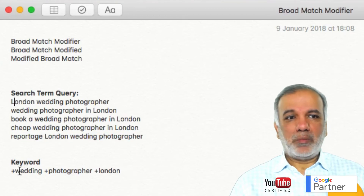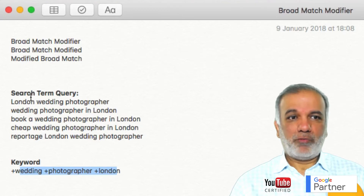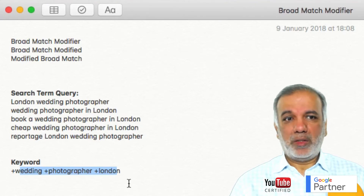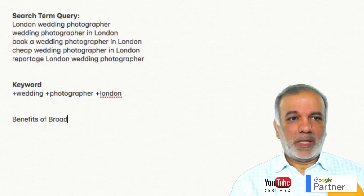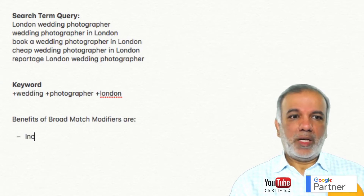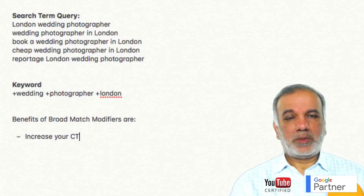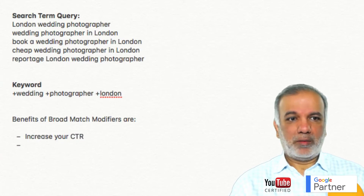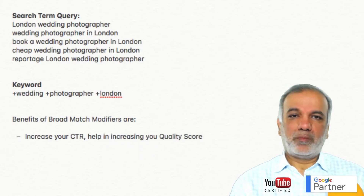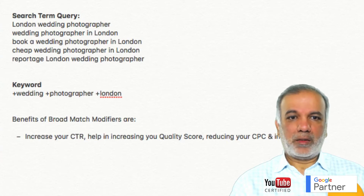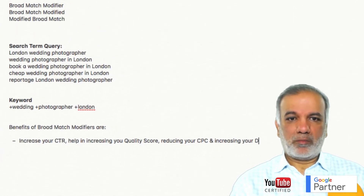As long as these three words are on that key phrase, my ad can potentially trigger. The benefits of broad match modifiers are that it helps you increase your CTR, which will help in increasing your quality score, reducing your CPC, and obviously increasing your ad rank.